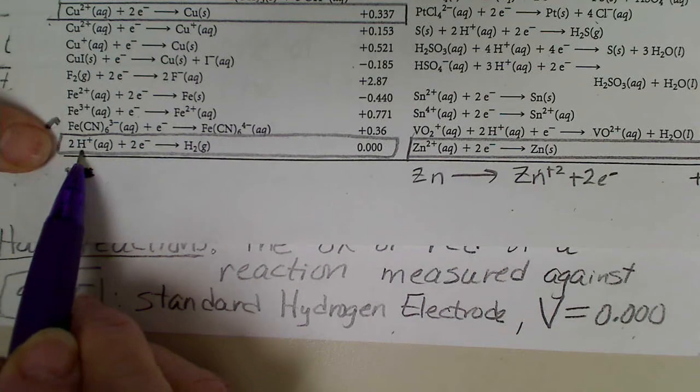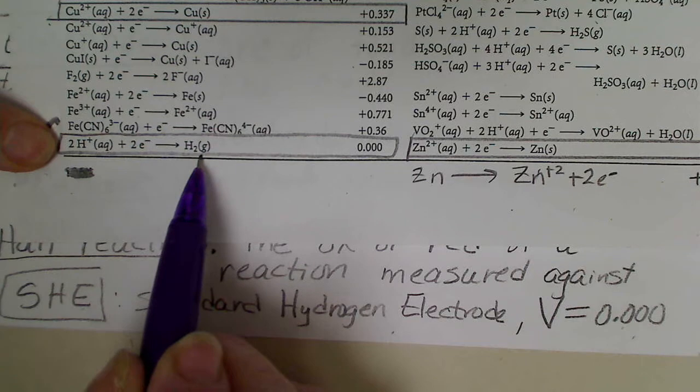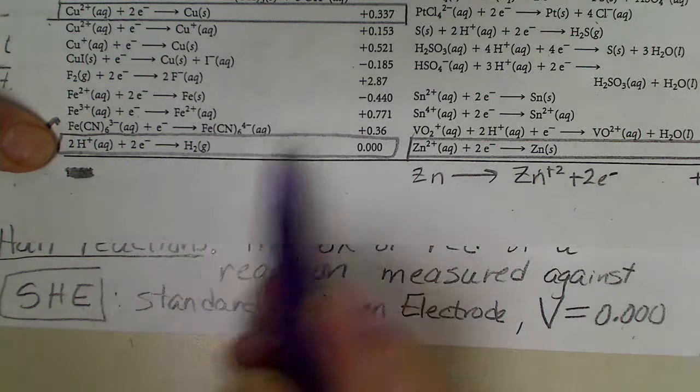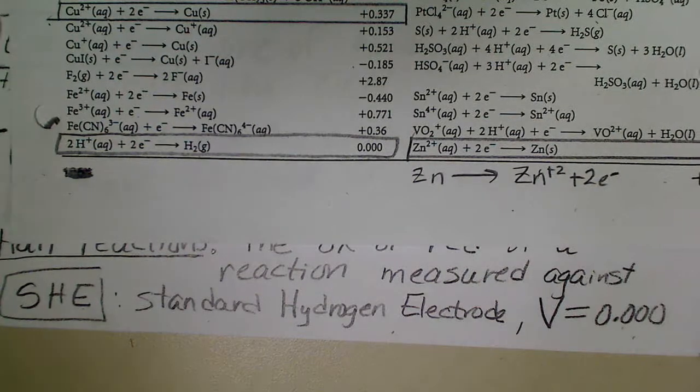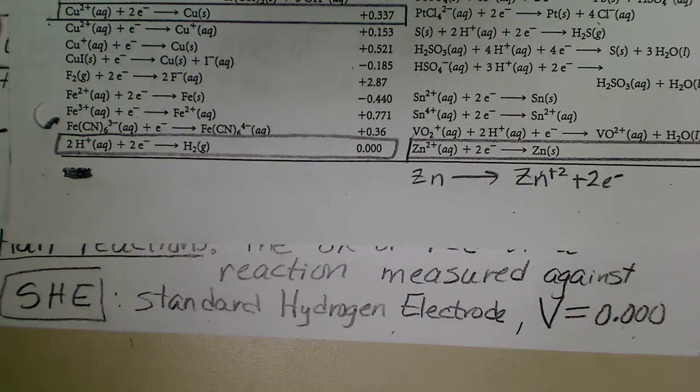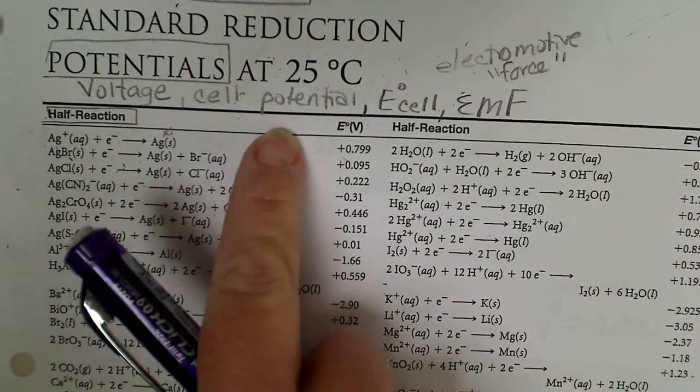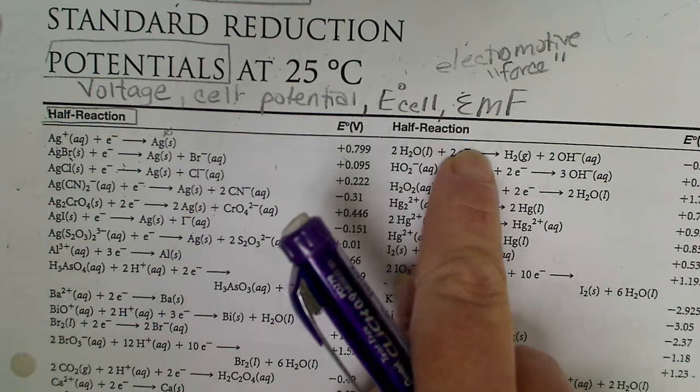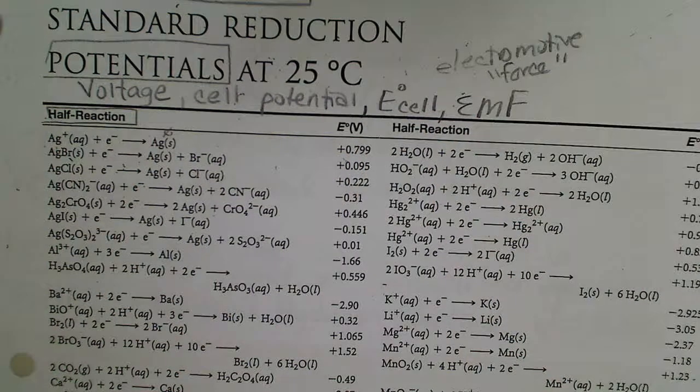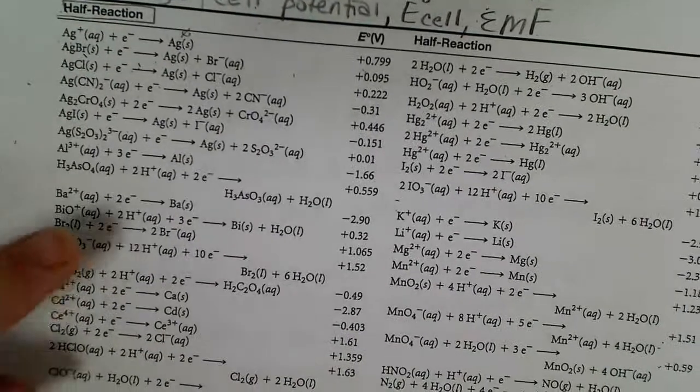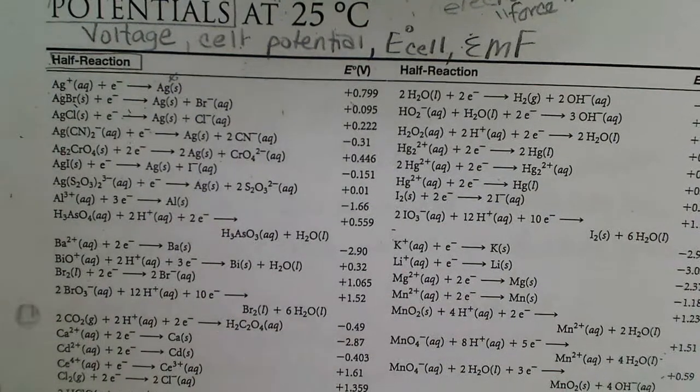When H+, which represents an acid, is reduced to hydrogen gas, that half reaction is defined as zero. When we measure the potential or the voltage or the cell potential or the EMF, or the book might ask us to calculate E cell, then we're going to use the two half reactions that we are interested in.